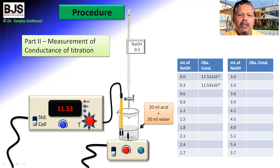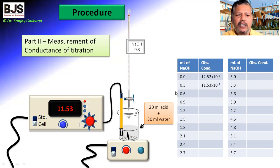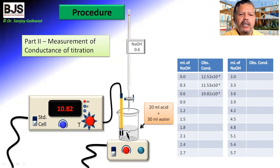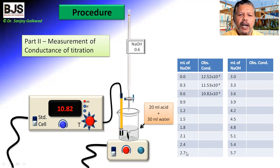As we continue adding NaOH in 0.3 ml increments — at 0.6 ml addition — after stirring, the reading is 10.82 × 10⁻³ mhos. As we continue adding in 0.3 ml increments, the conductance steadily decreases. When we have added up to 3.9 ml, the conductance has decreased to 3.07 × 10⁻³ mhos.